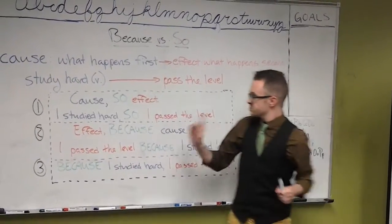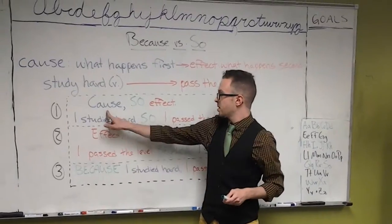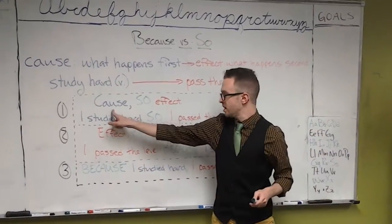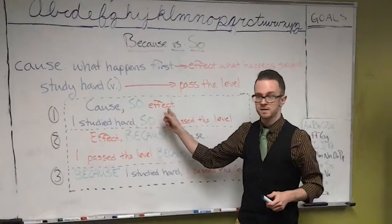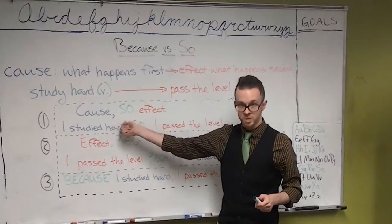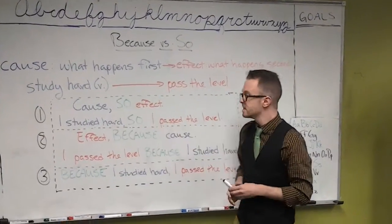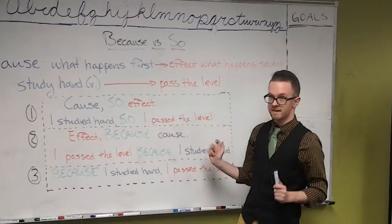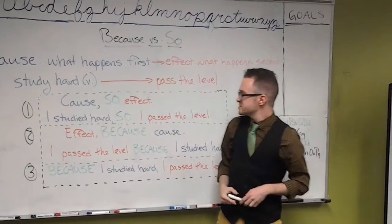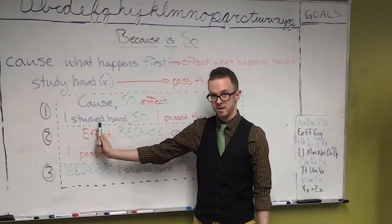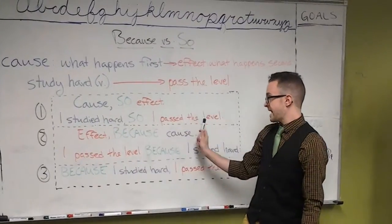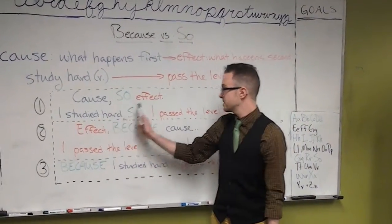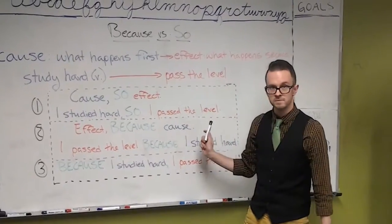The first way to do this is: cause, so, effect. When the cause is first and the effect is second, the word in the middle is always 'so.' So in this example: 'I studied hard, so I passed the level.' This means that first I studied hard, and because of that, I passed the level. I studied hard, so I passed the level. If it is cause and then effect, 'so' is always the word in the middle.